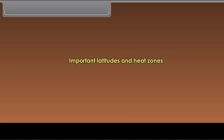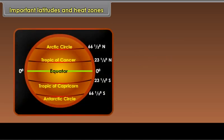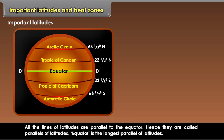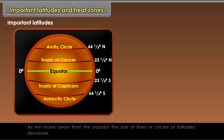Important latitudes and heat zones: All the lines of latitudes are parallel to the equator, hence they are called parallels of latitudes. The equator is the longest parallel of latitudes. As we move away from the equator, the size of lines or circles of latitudes decrease.